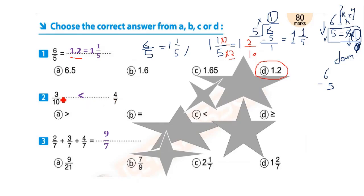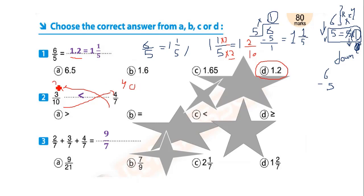Number two: three-tenths and four-sevenths — how do I compare? The numerators are different and the denominators are different. The easiest method is cross multiplication. Ten times four equals forty; seven times three equals twenty-one. Which is greater? Forty. So answer C is correct.